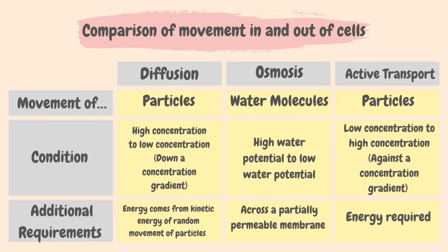Let's take a look at the comparison between the three processes that facilitate movement in and out of cells. In diffusion and active transport, we are talking about the movement of particles, whereas osmosis involves the movement of water molecules. In diffusion, particles move down a concentration gradient; in active transport, particles move against a concentration gradient; and in osmosis, water molecules move from a place of high water potential to a place of low water potential. In diffusion, particles get energy from the kinetic energy of their random movement; in active transport, particles need energy from respiration; and in osmosis, water molecules move across a partially permeable membrane.